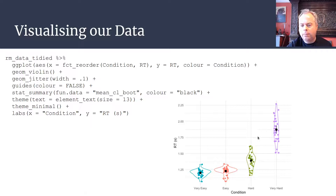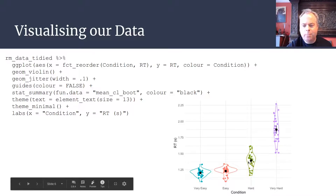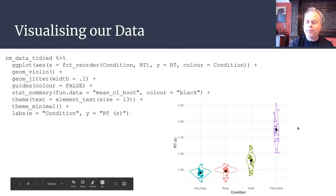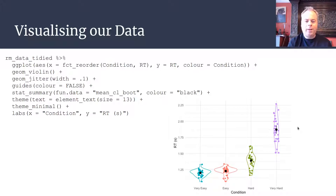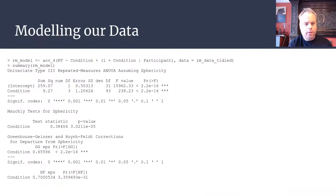We can see from the stat_summary layer that the means and bootstrap confidence intervals are exactly as expected: the very easy and easy conditions are pretty similar to each other, the hard condition is higher, and the very hard condition is higher still. This emphasizes the importance of doing visualizations before building your model, as it gives you an idea of what to expect when you look at the model output.